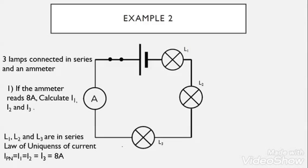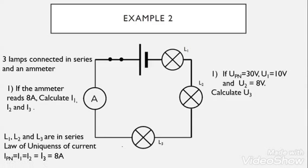Since L1, L2, and L3 are in series — as you can see they are beside each other — we apply the law of uniqueness of current: IPN equals I1 equals I2 equals I3 equals 8 amperes. Now, if UPN across the dry cell is 30 volts, U1 equals 10 volts, and U2 equals 8 volts, calculate U3, the voltage across L3.